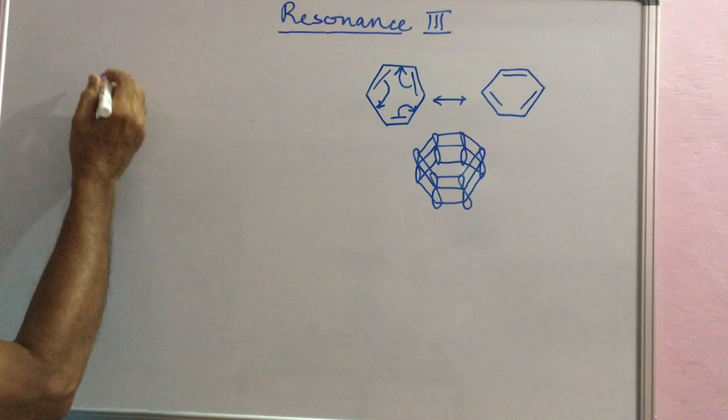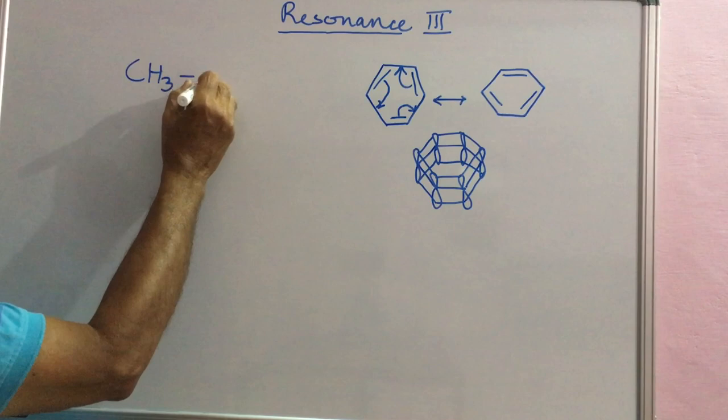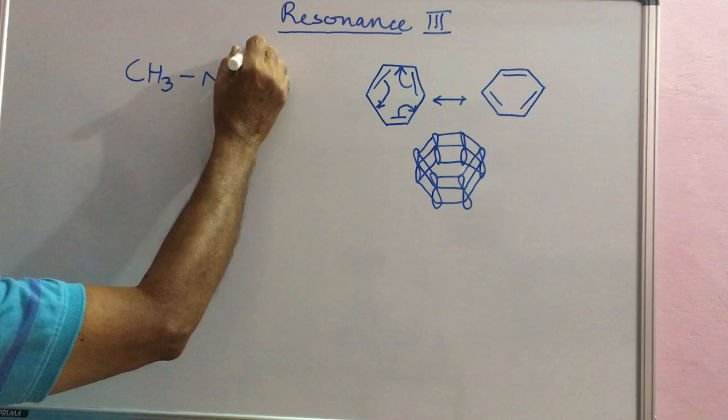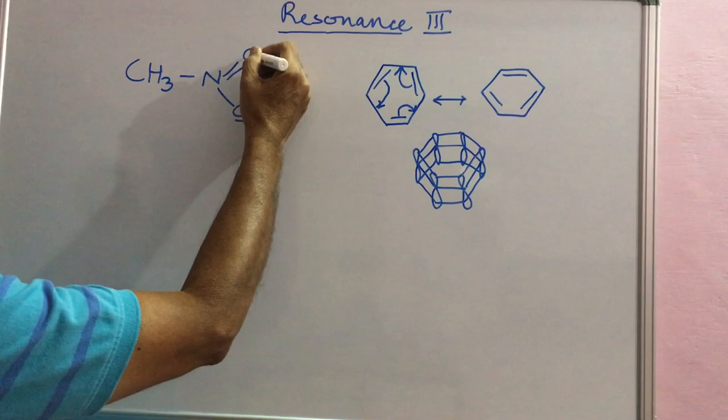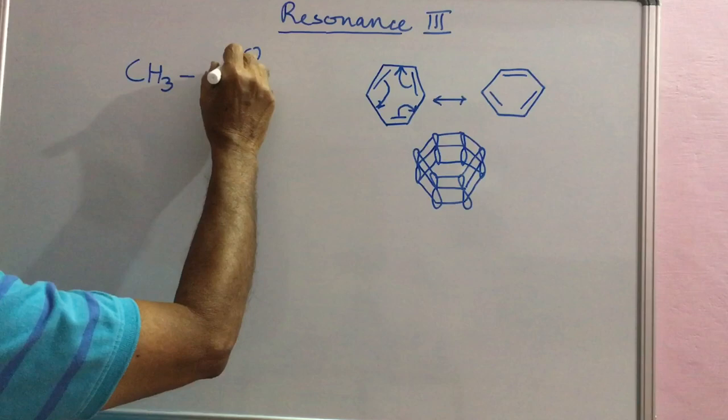Another case, nitromethane. This is sp2 hybridized and so are these oxygen atoms. Electron pair in conjugation with this double bond. So, as usual, the movement will be like this.